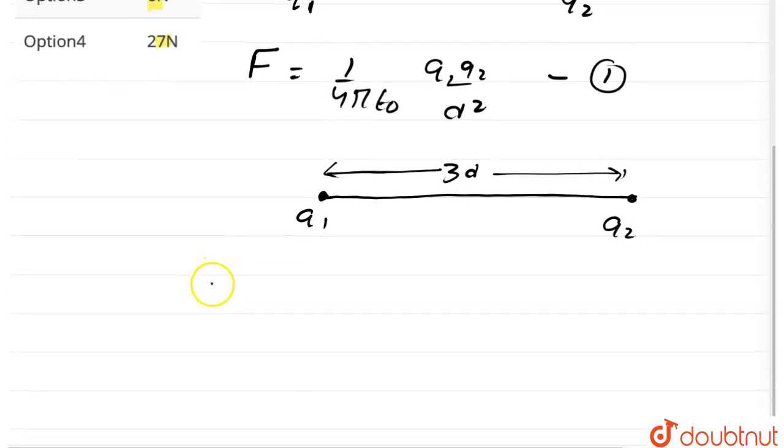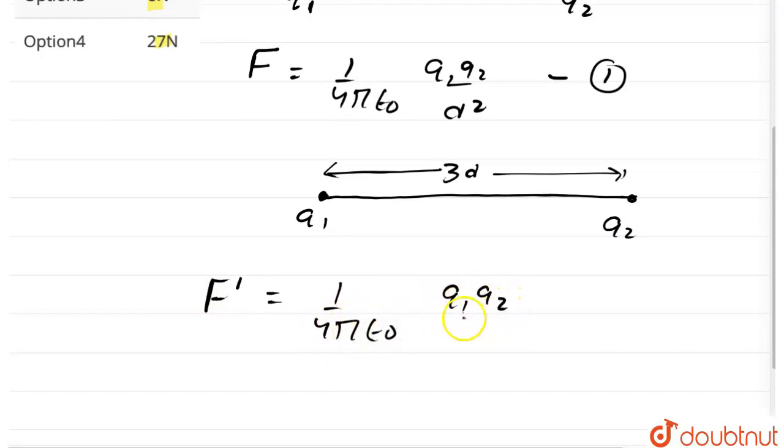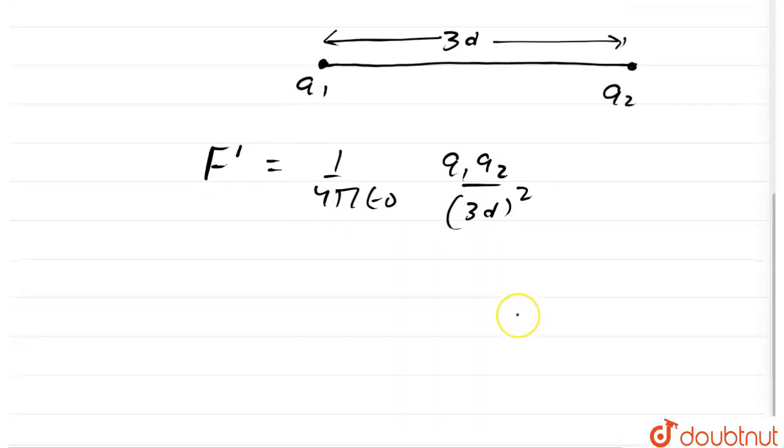So new force f dash would be 1 upon 4 pi epsilon 0. The charges are same q1 into q2 upon 3d whole square.